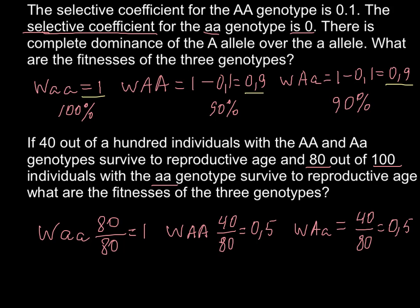As you see, this is not 0.8 for the homozygous recessive genotype and not 0.4 for the homozygous dominant and heterozygous. The numbers are different — 1, 0.5, and 0.5 — and these are the values we use for our results.